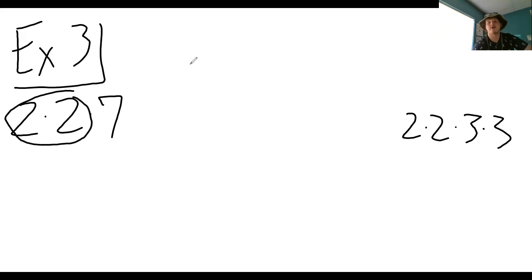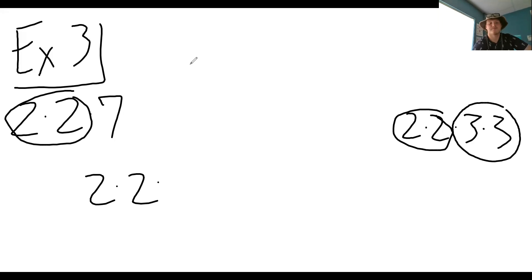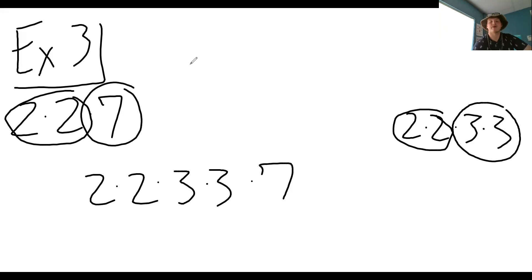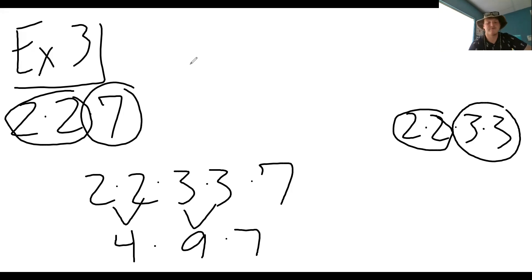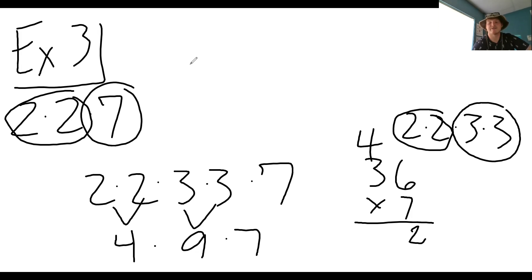Over here we have two twos and over here we have two twos — the same number, so I'll use two times two. I'll also use the two threes — three times three. And I'll also use the seven. Two times two is four, three times three is nine, nine times four is 36, times seven gives 252.